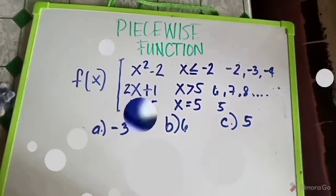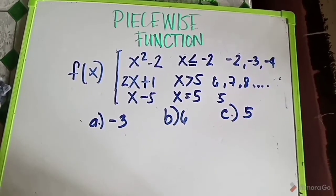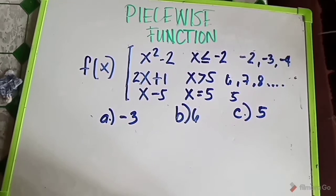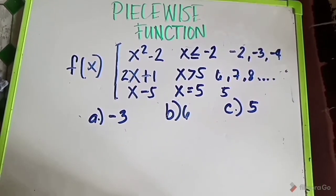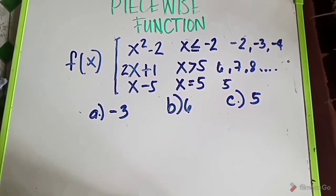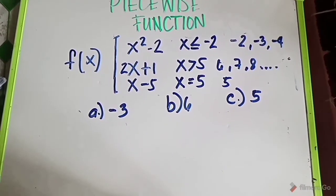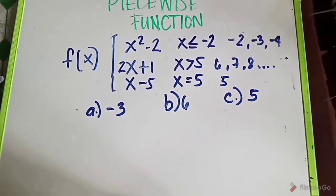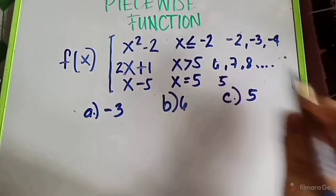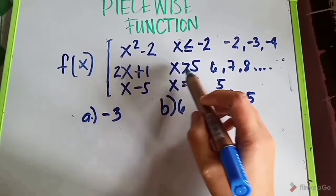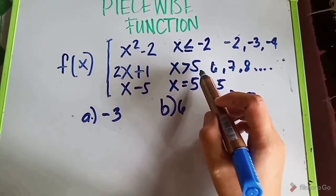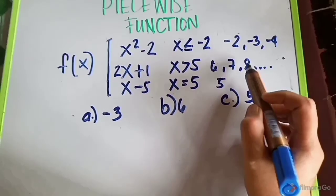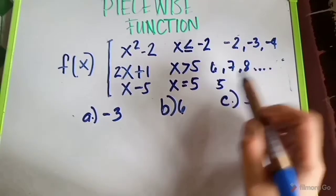Let's identify letter B, which is equivalent to 6. We will use 2x plus 1 because x greater than 5 includes the numbers 6, 7, 8, 9, and so on. So we choose the piece where x is greater than 5 and substitute x equals 6.